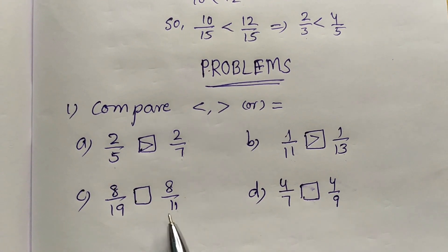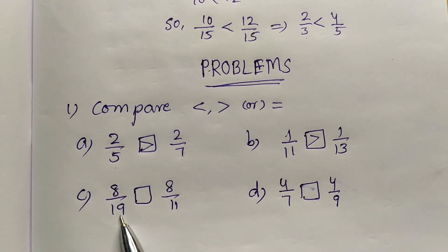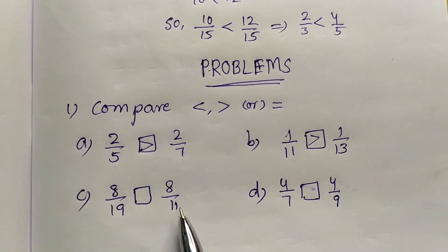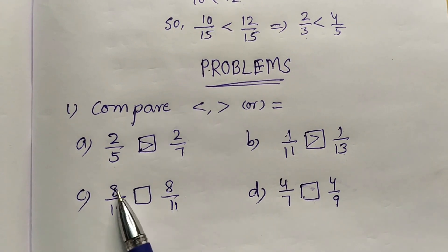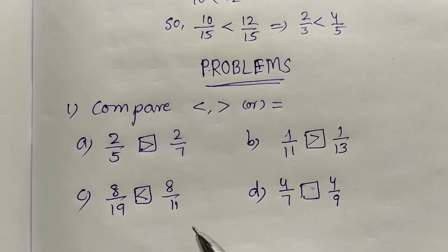Here the numerators are the same. Compare the denominators 19 and 11 — 19 is the greater. So 8 by 19 is the smaller fraction and 8 by 11 is the greater fraction. So 8 by 19 is less than 8 by 11.